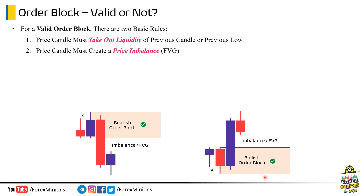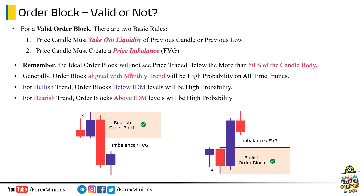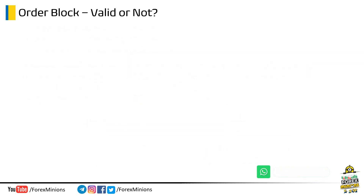Remember these general things about an order block: the ideal order block will not see price traded below more than 50% of the candle body — meaning the retracing candle's body should not close more than 50% of this block. Generally, order blocks aligned with the monthly trend will be high probability on all time frames. For a bullish trend, order blocks below IDM levels will be high probability. For a bearish trend, order blocks above IDM levels will be high probability.